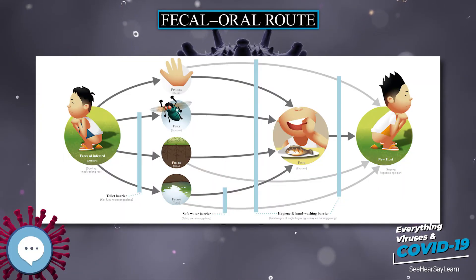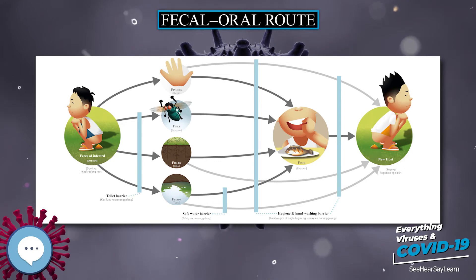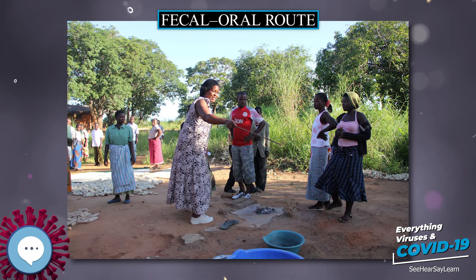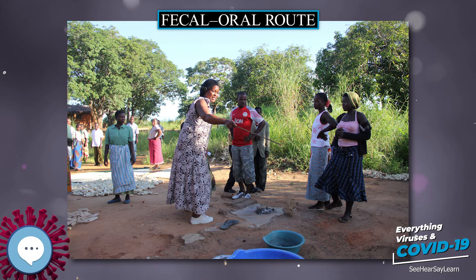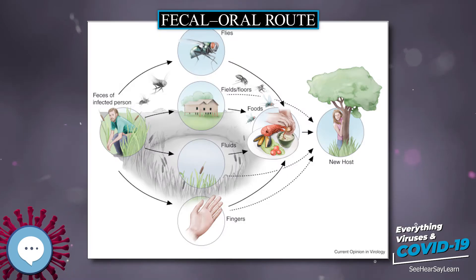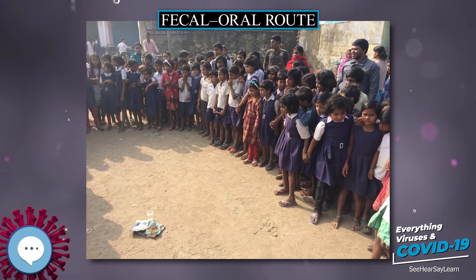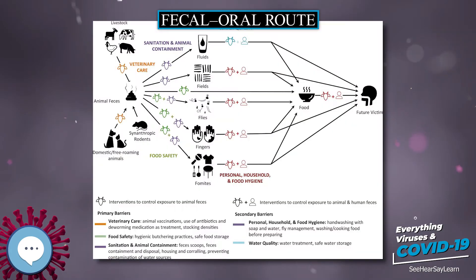The fecal-oral route, also called the oral-fecal route or orofecal route, describes a particular route of transmission of a disease wherein pathogens and fecal particles pass from one person to the mouth of another person. Main causes of fecal-oral disease transmission include lack of adequate sanitation, leading to open defecation, and poor hygiene practices.